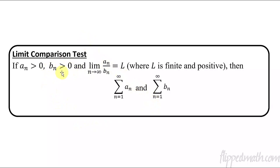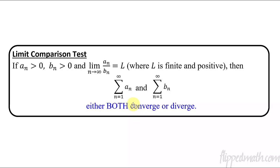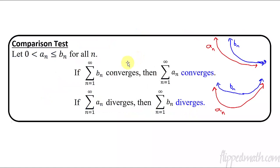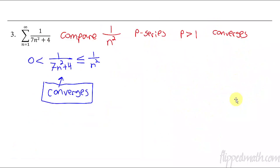So here's what happens with the limit comparison test. You don't have to know which one's larger. You just put them in a little fraction. You set this up and then take the limit as n approaches infinity — you put one over the other. And as long as your limit is finite and positive, then what happens is both of these two series either both converge or they both diverge. So if you know what the series you're comparing it to does, and the limit works out, then they both do the same thing.